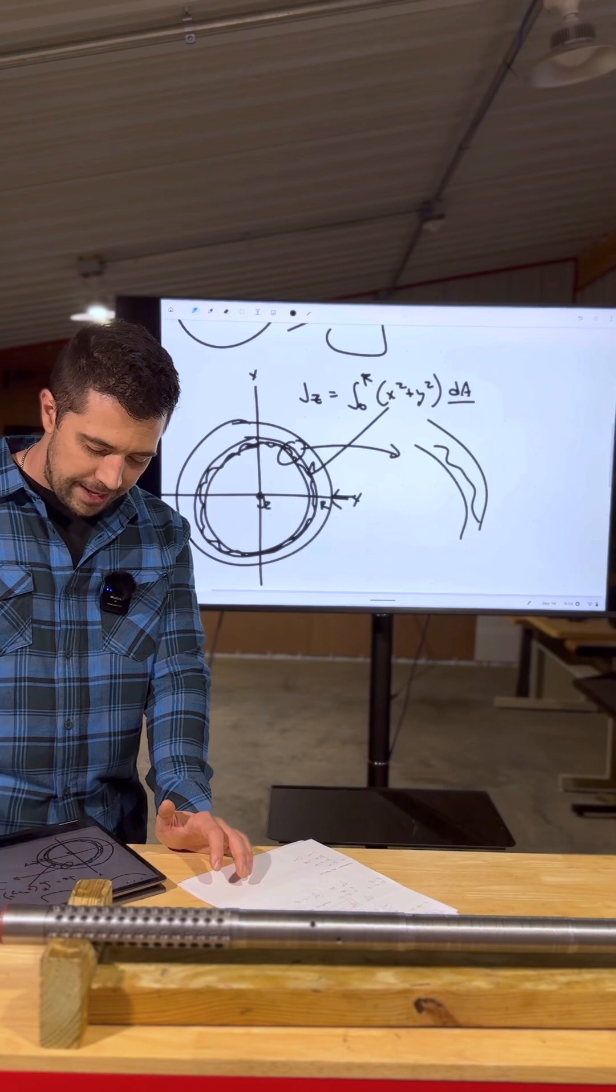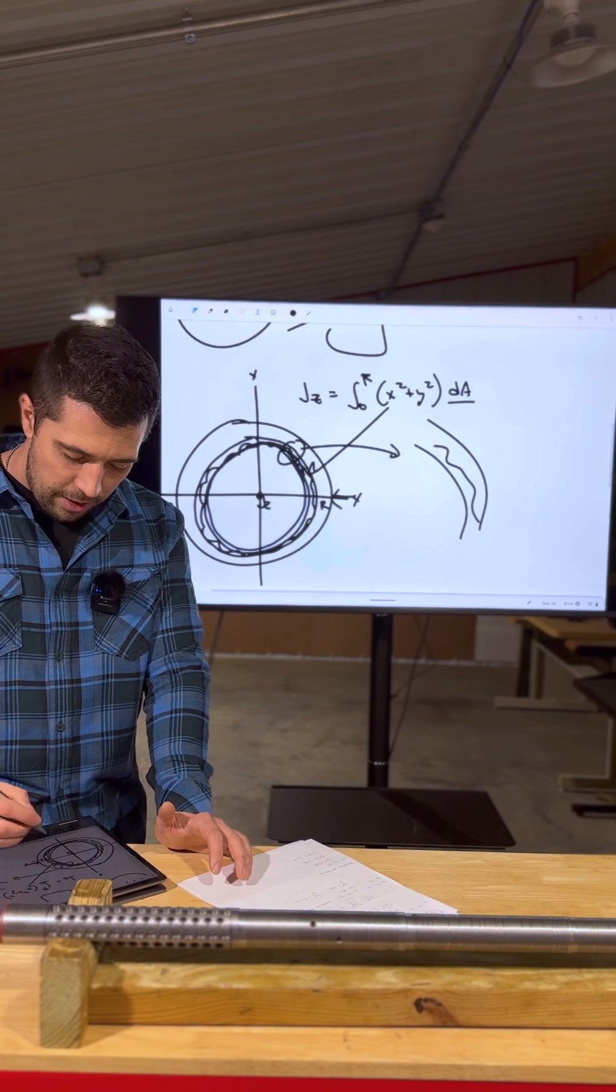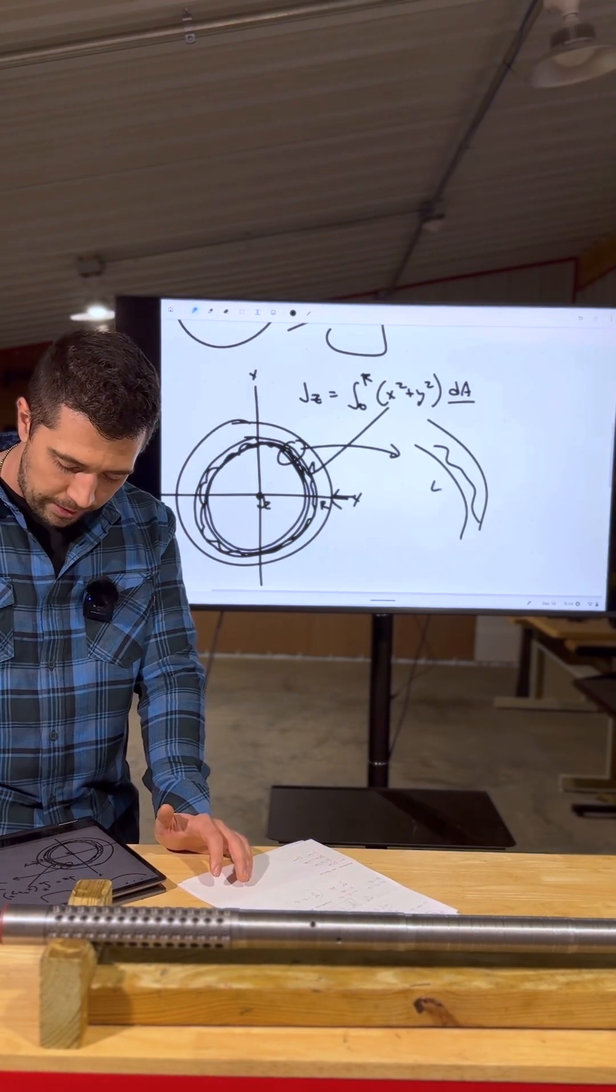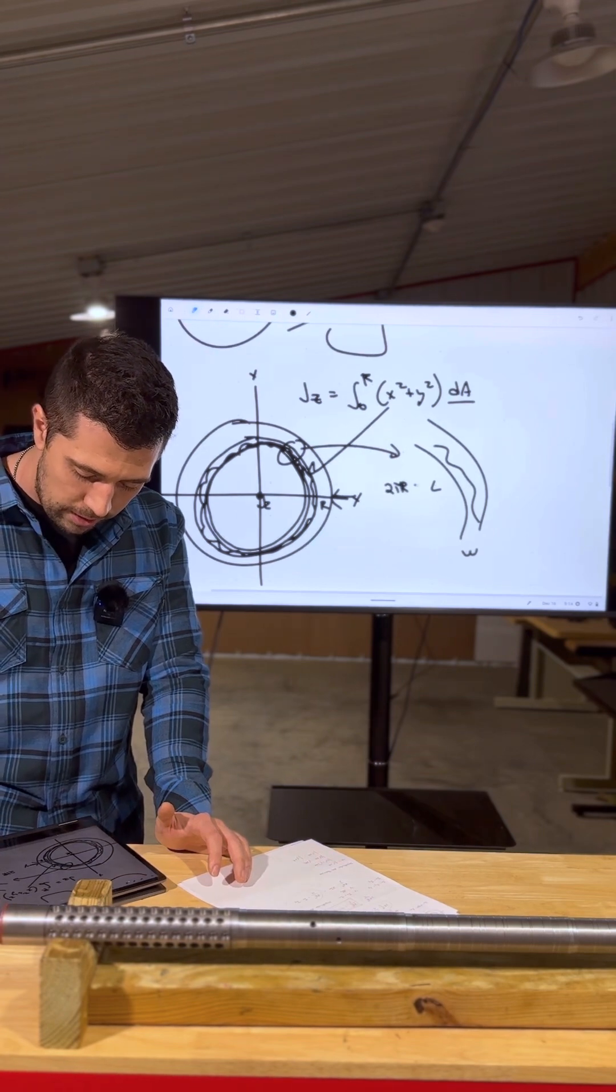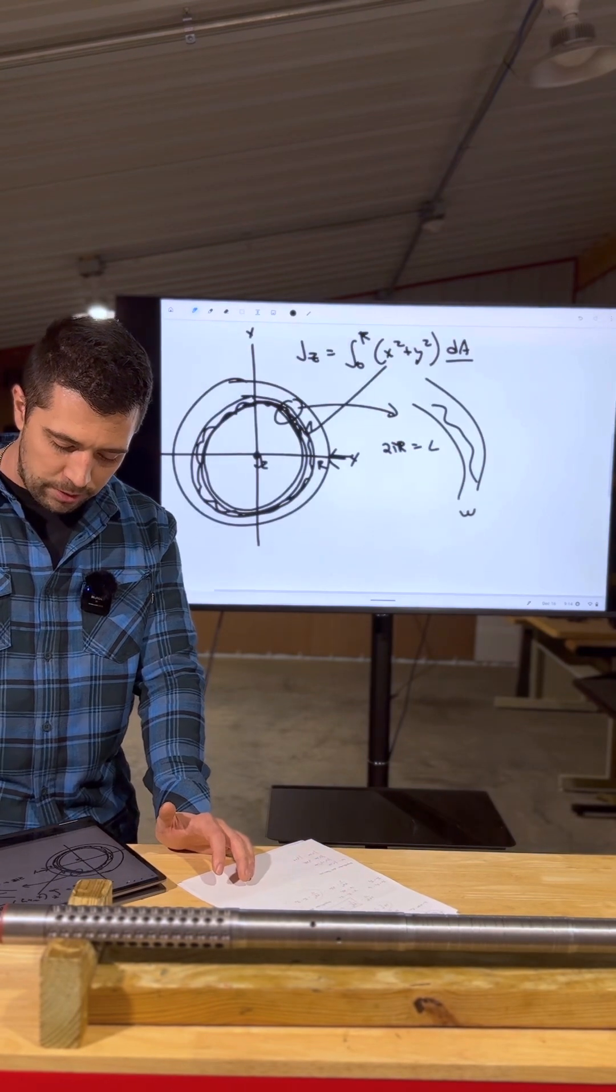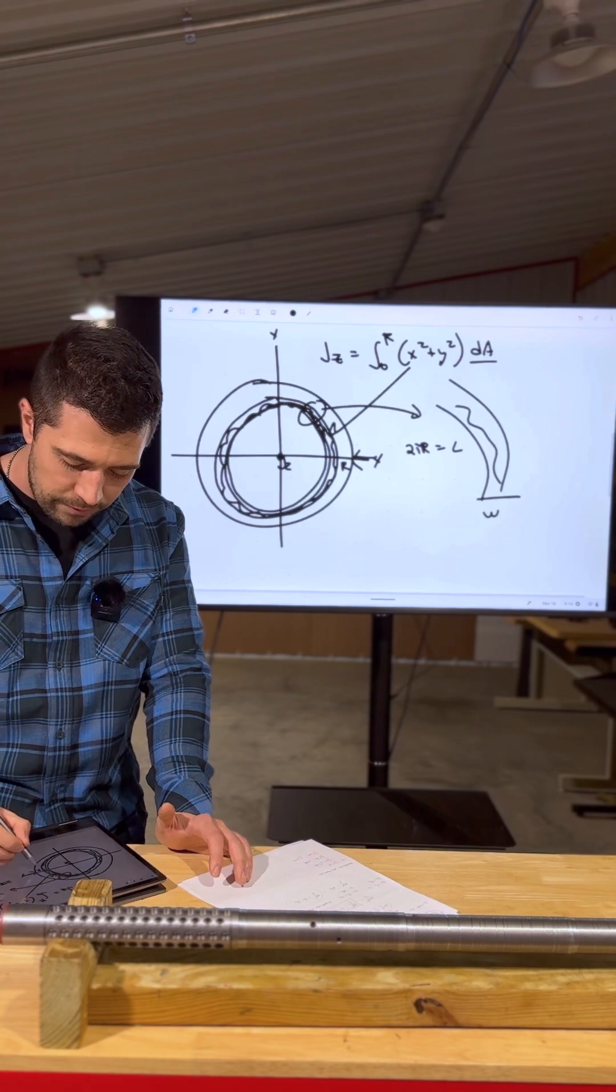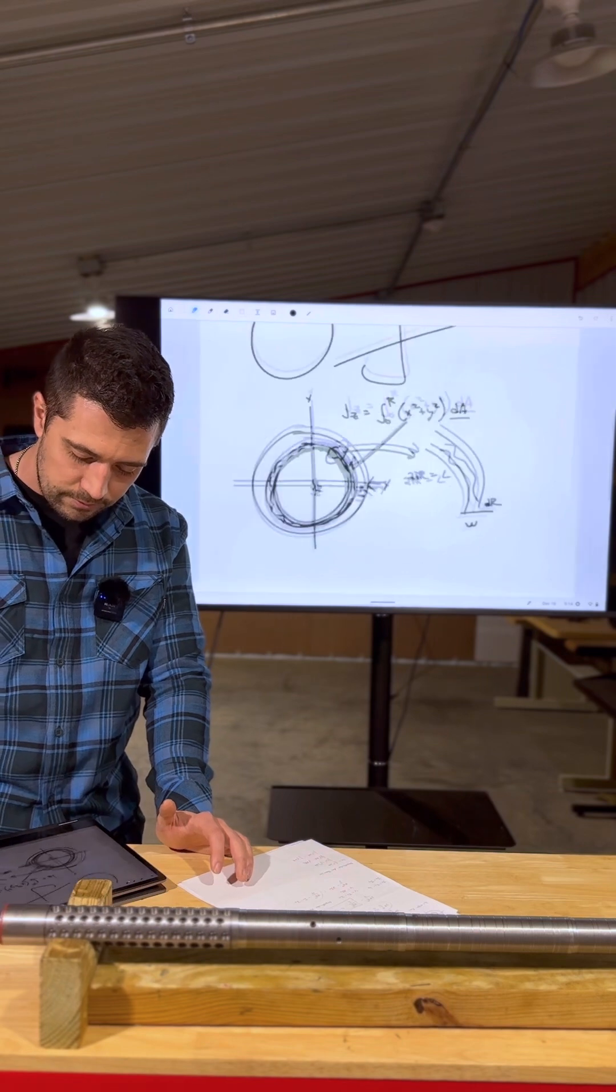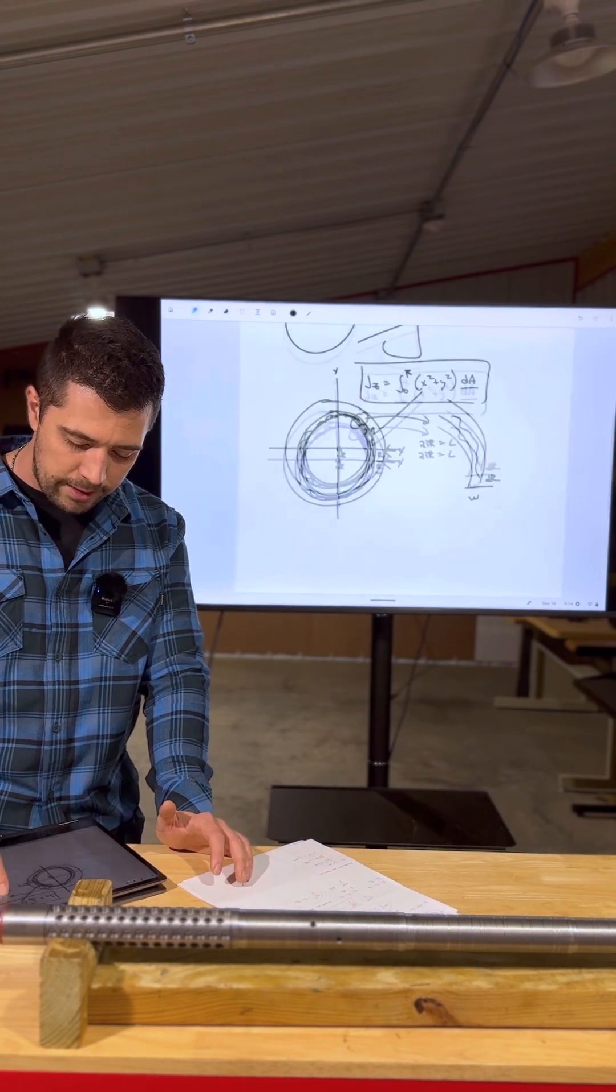Since this is infinitely thin, it's just going to look like a simple line, that line is going to be the perimeter. So we have length and width. So we have 2πR equals L being the perimeter around our circle. The width is going to be an infinitely small section of R. So we'll say dR.